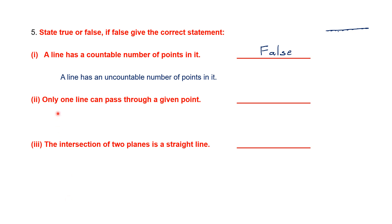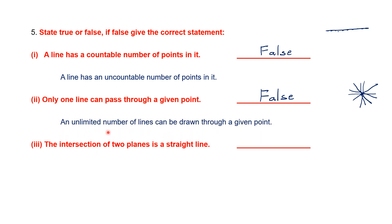Question two: only one line can pass through a given point. Suppose you have one point — you can draw one line, another line, another line; many lines can pass through a single point. So this statement is false. The correct statement is: an unlimited number of lines can be drawn through a given point. Third: the intersection of two planes is a straight line — that's a true statement. When two planes meet, you get a straight line between them.